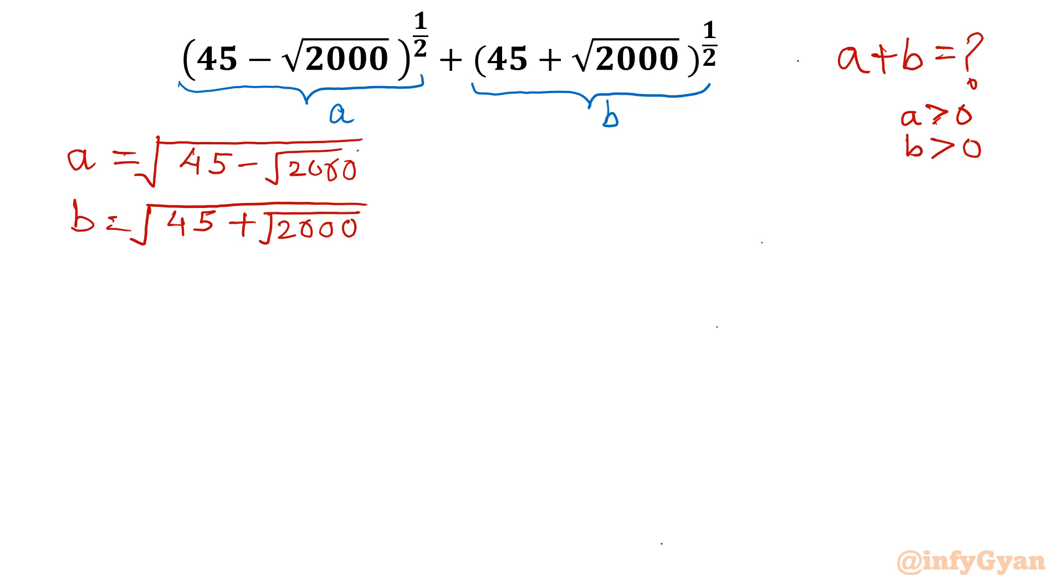Now I am going to consider squaring, so a² equals 45 minus √2000 and b² equals 45 plus √2000. The complete bracket will be over. Now if I add both, then I will have a² + b² = 90. Now the clue is straight away clear that a² + b² = 90.